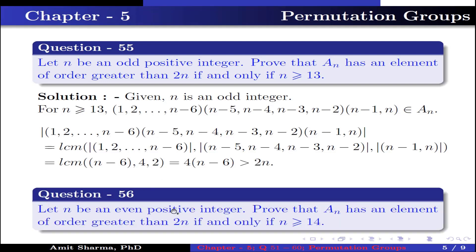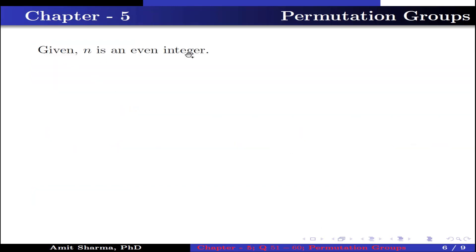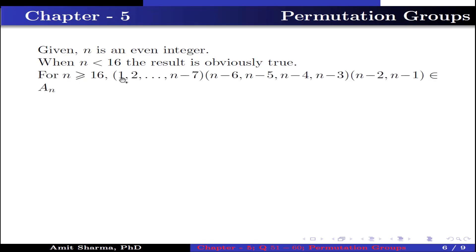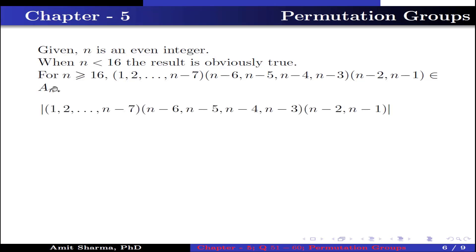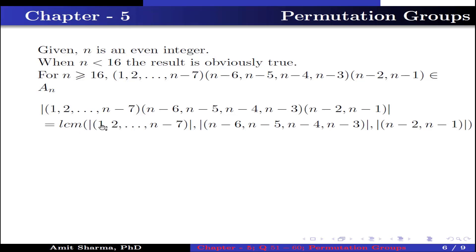Question number 56. Let n be an even positive integer; prove that An has an element of order greater than 2n if and only if n is greater than or equal to 14. Given n is an even integer; when n < 16 the result is obviously true. For n ≥ 16, the product of permutation (1 2 ... n−7)(n−6, n−5, n−4, n−3)(n−2, n−1) belongs to An, and its order equals lcm(n−6, 4, 2) = 4(n−6), which is greater than 2n.